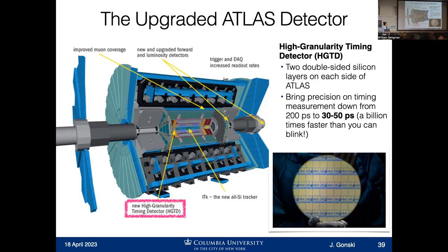We also have a new high granularity timing detector — a silicon-based detector composed of two double-sided silicon layers on each side of the ATLAS cavern. This brings our precision on the timing measurement — the arrival time of particles at that particular point in the detector — down from 200 picoseconds to about 30 picoseconds. A picosecond is 10 to the minus 12 of a second — about a billion times faster than you blink. This allows us actually to probe within the uncertainty of the bunches of protons that are colliding, down to how much distance there is between two protons in a bunch, with collisions happening 40 million times a second.